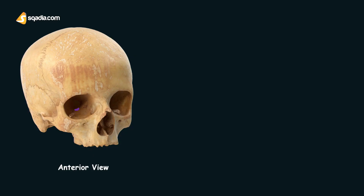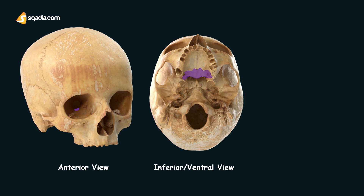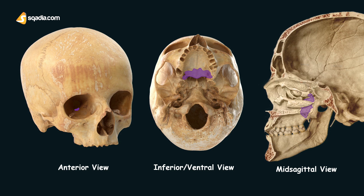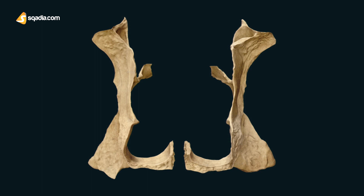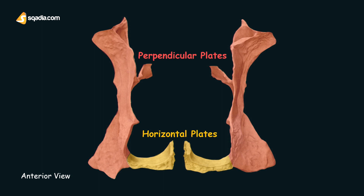When the skull is viewed in the anterior aspect, the palatine bone appears as shown here. Then we have the inferior or ventral view, and lastly the mid-sagittal view of the skull — the palatine bones are all colored in purple. The palatine bone is composed of two plates: first the horizontal plate, and then the perpendicular plate, which are connected to form a characteristic L shape. This bone also features three processes: the pyramidal, orbital, and sphenoidal.